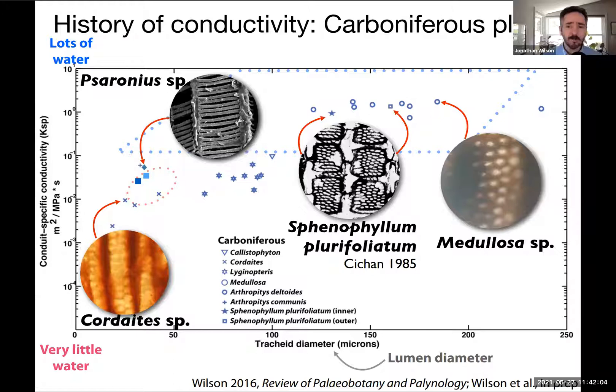In many ways, the Carboniferous looks like the modern distribution. Recall that plants with high conductivity are vulnerable to cavitation and embolism. So replacing a forest of wetland medullosins with coniferophytes and tree ferns will not only change the drought vulnerability of the ecosystem, but also change the export of water to the atmosphere.